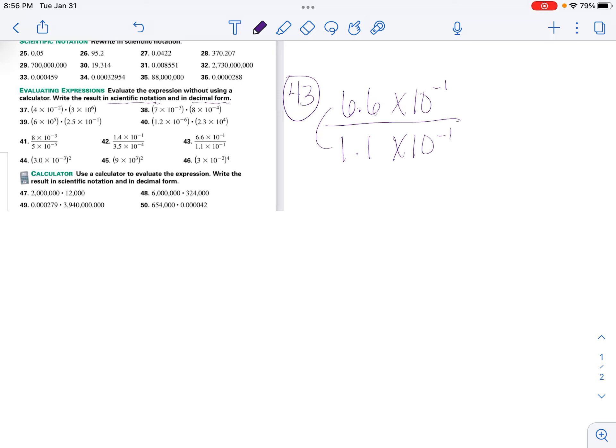First we're going to divide. 6.6 divided by 1.1, and that gives us 6.0.